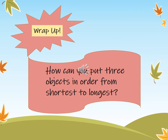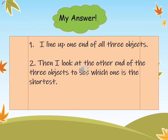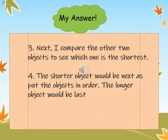Before the lesson ends, let's have a wrap-up. How can you put three objects in order from shortest to longest? Number one: I line up one end of all three objects. Number two: I look at the other end of the three objects to see which one is the shortest. Number three: I compare the other two objects to see which one is shorter. Number four: the shorter object is next, and the longer object is last.